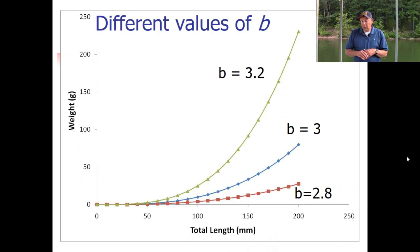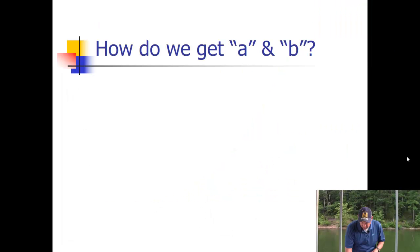If you look at how different values of b affect the length-weight relationship, the larger that value, the faster they put on weight with length. If b equals 3.2, which is positive allometric growth, they put on weight very quickly as they get longer. If b equals 2.8, that's negative allometric growth, and they don't put on weight nearly as fast. That's the relationship between length and weight.